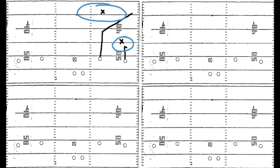Let's talk about cover two against smash. This is honestly the most common concept run against cover two. What happens is this slot receiver runs a corner or corner-post route, and even though we're not stretching the safety or doing anything complicated to him, it is so hard for him to cover this corner-post route — it really is just the alignment and leverage he gets. He really needs help from the corner.